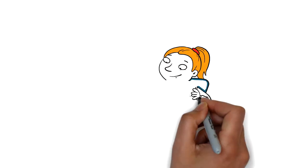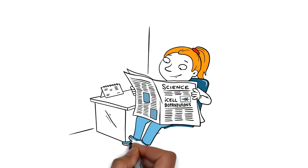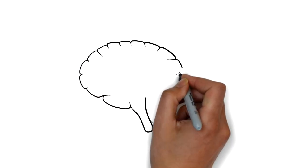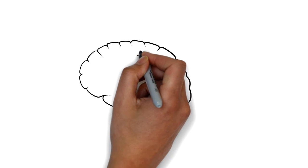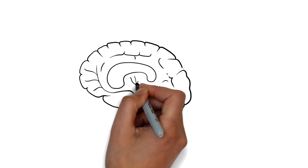At least that was the case until Amanda learned about iCell Dopa Neurons. These are fully functional, human, midbrain dopaminergic neurons made from induced pluripotent stem cells, or iPS cells.